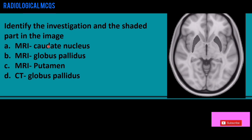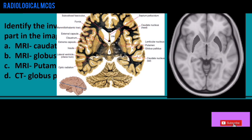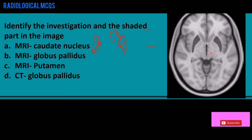Next we have to identify whether it is the caudate nucleus, globus pallidus, or putamen — essentially which part of the basal ganglia it is. The part of the basal ganglia that surrounds the frontal horn of the lateral ventricle is the caudate nucleus. The rest is the lentiform nucleus, whose medial part is the globus pallidus and lateral part is the putamen. On this MRI, the medial part is the globus pallidus and the shaded lateral part is the putamen. Therefore the correct answer is option C — MRI showing the putamen.